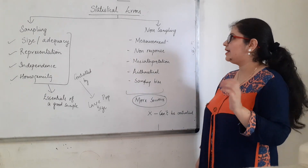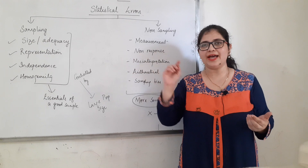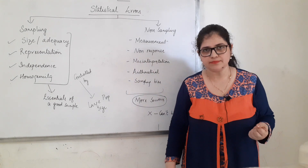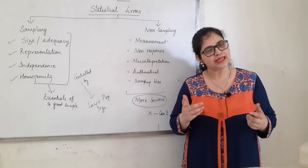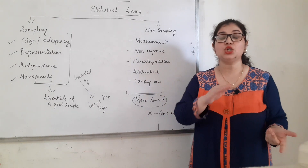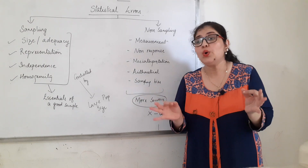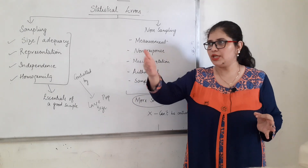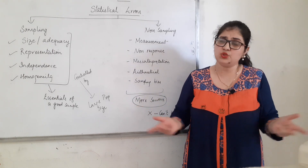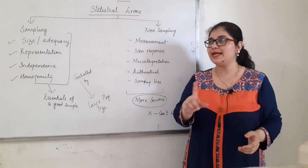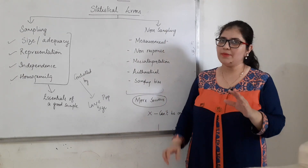Non-sampling errors mein pehla error hai measurement. Measurement ki galti kar di — ek enumerator gaya, usne one, two, three, four, five mein one ko best, five ko worst maan ke mark kar diya. Doosra gaya, usne five ko best, one ko least kar diya. Garbad! Measurement ki galti — ek ne kuch kara, ek ne kuch kara — total absolute wrong data. And why is this serious? Because jab main analysis karne baithhungi, I have no way of finding out ki ek enumerator ne one to five best-to-worst mark kiya hai aur ek enumerator ne bilkul ulta kiya hai — mujhe kya pata? Toh yeh bahut badi galti hai.